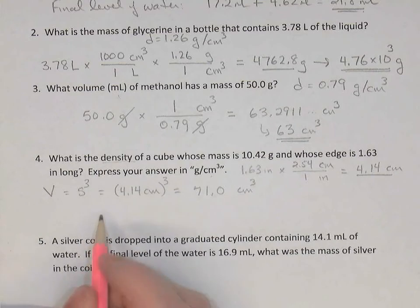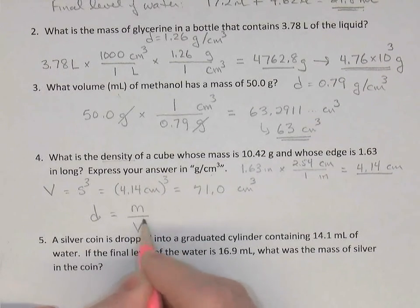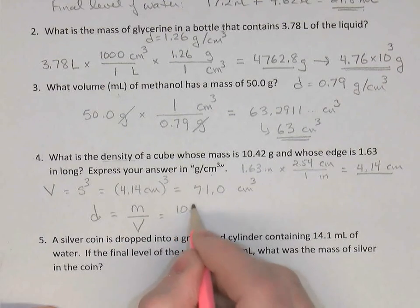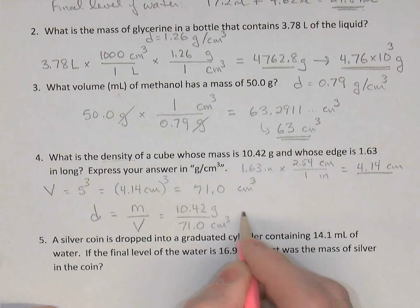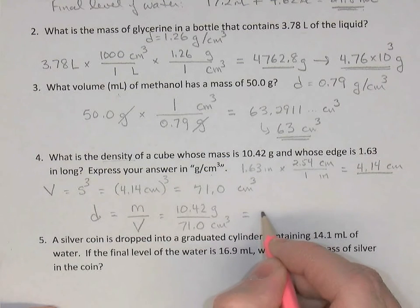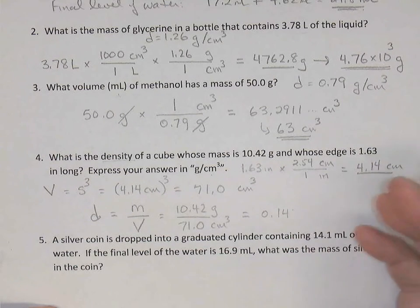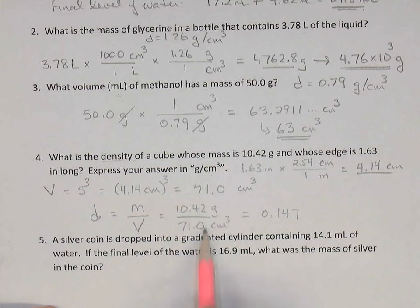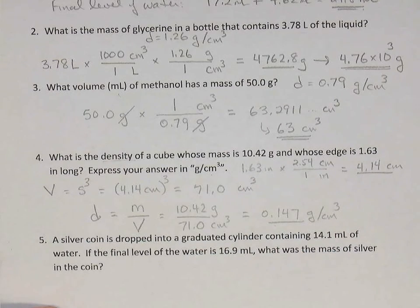Now the question was what's the density — this is the only time we're going to use the density formula. Density equals mass divided by volume. The mass was 10.42 grams and the volume we just found was 71.0 cubic centimeters. Dividing 10.42 by 71.0 gives 0.147. We keep three digits because there were three digits in the volume and four in the mass, and we keep the smaller number when dividing. So 0.147 grams per cubic centimeter is the density of that cube.